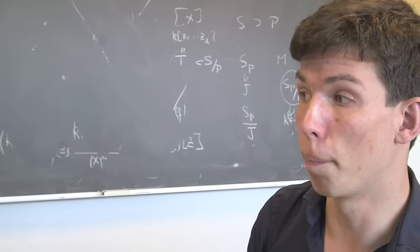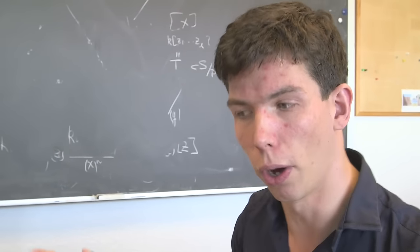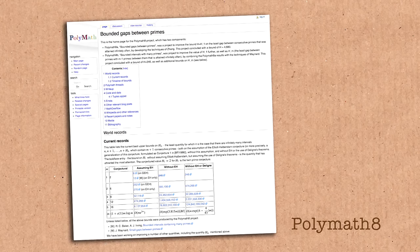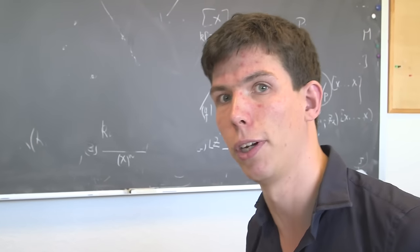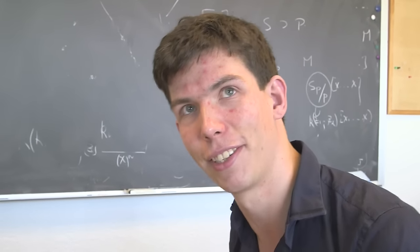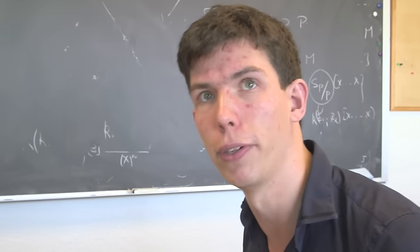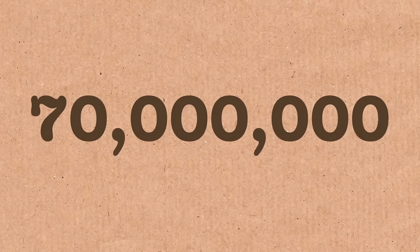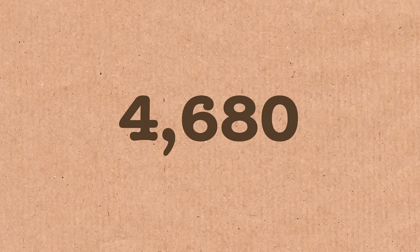There was a Polymath project, a big online collaborative project set up precisely to optimize the arguments in Zhang's work. They came up with quite a lot of neat ideas to make Zhang's argument as efficient as possible. They were able to bring Zhang's bound of 70 million down to I think 4,680.